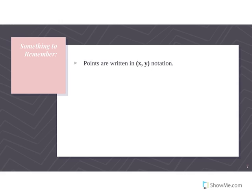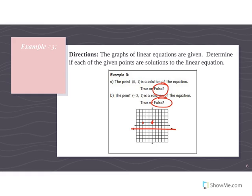Something to remember: points always come in the form (x, y) in your notation. When you're graphing your points, you need to know that x represents left and right, and y represents up and down.